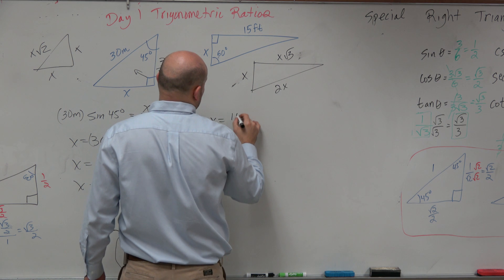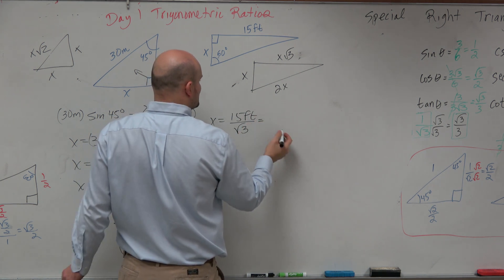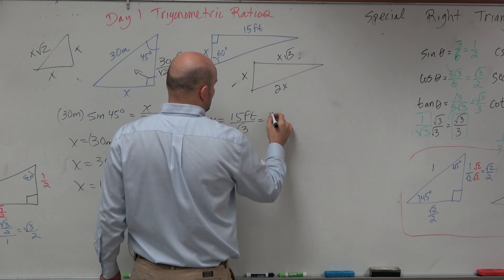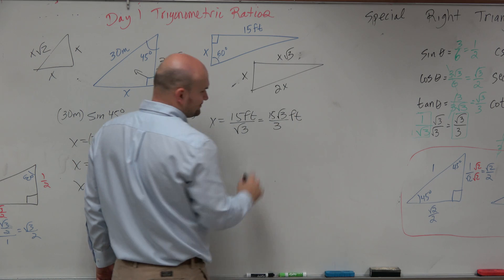So x equals 15 feet divided by the square root of 3, which I could rationalize the denominator. And that would be 15 square root of 3 over 3 feet. OK?